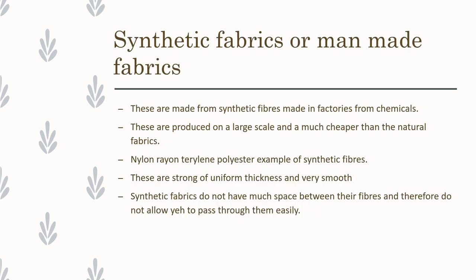There is another category: synthetic fibers, also called man-made fibers or fabrics. These are not obtained from natural sources; they are made in factories with the help of chemicals. That is why they are called synthetic. These are produced on a large scale and are much cheaper than natural fabrics. Examples are nylon, rayon, terrylene, etc. Comparatively, they are strong, have uniform thickness, and are very smooth.